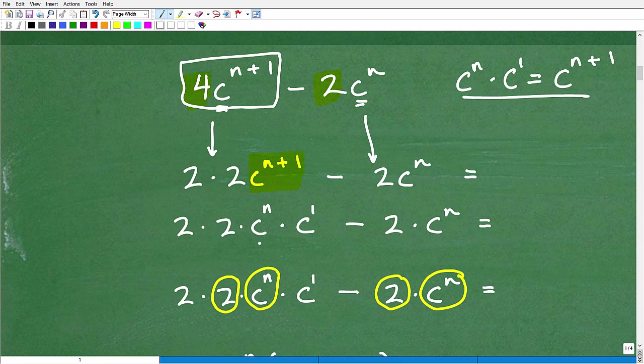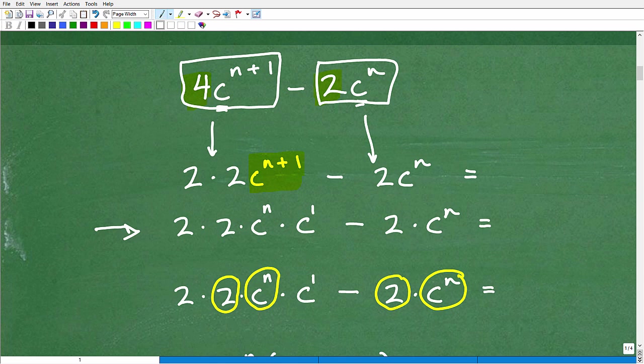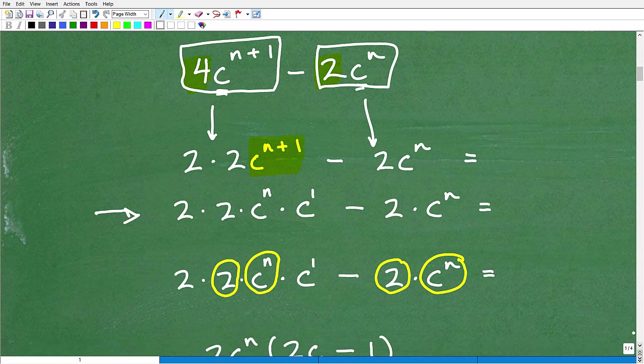So C to the N plus one I could break this down as C to the N times C to the one. C to the N times C to the one is C to the N plus one. So now this thing is completely factored. Now, let's do the same thing to this other expression, 2 times C to the N. So that's just 2 times C to the N.